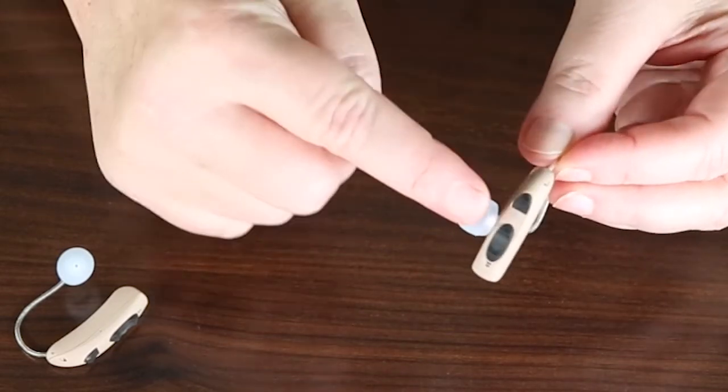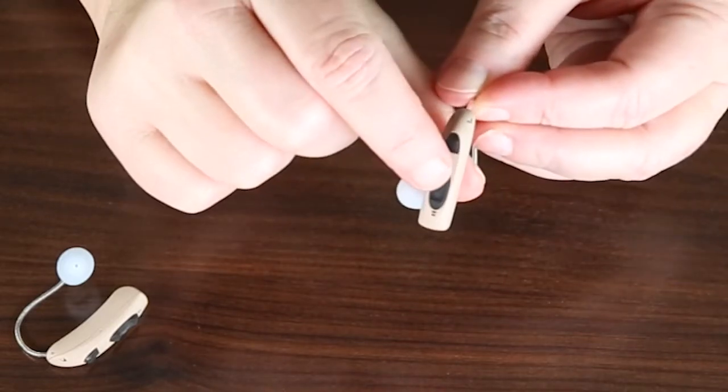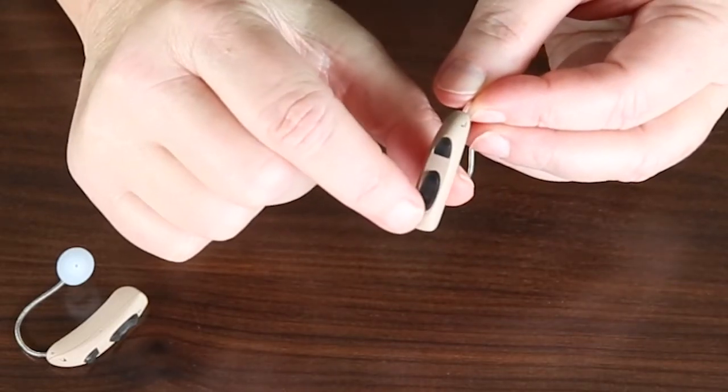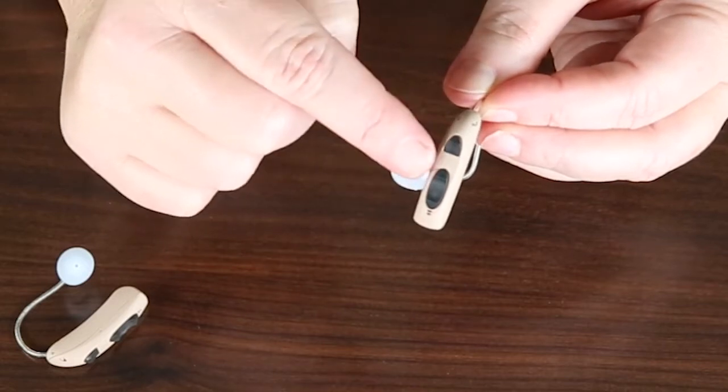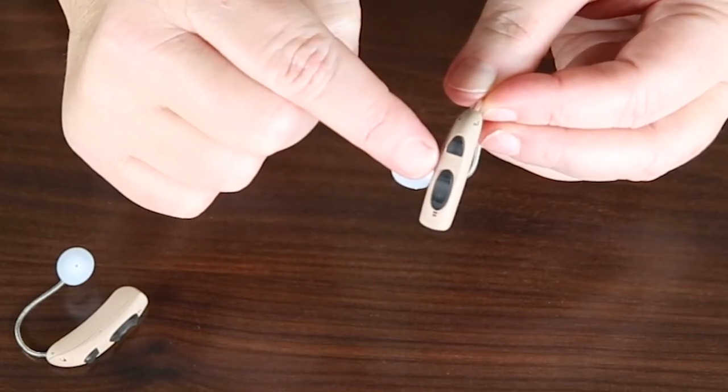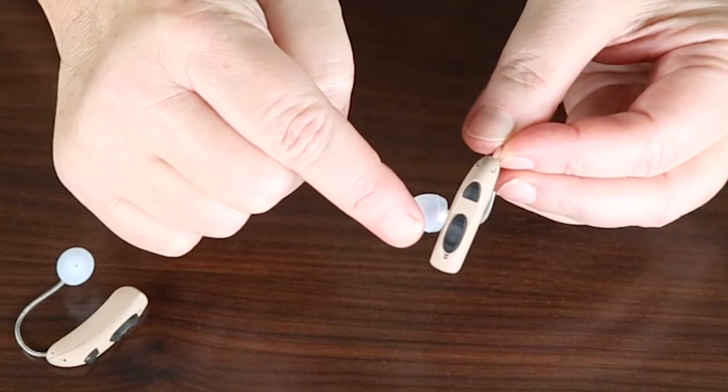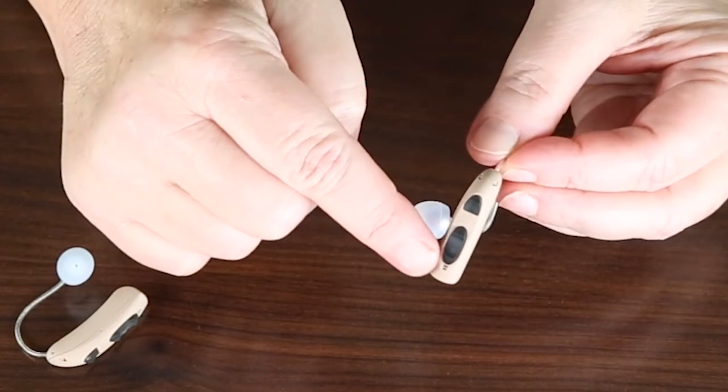Once you have the hearing aid in your ear, you can choose to turn the volume up or down. If you need it louder, you're going to press at the top of the volume button. If you need it softer, press at the bottom of the volume button.